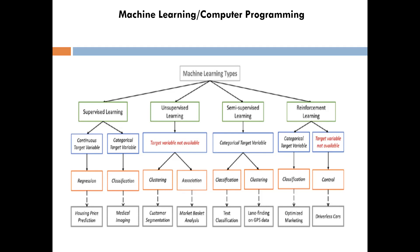A classic example is driverless cars, which are based on reinforcement learning. The camera senses a person on the road and the algorithm knows: if I don't stop, I can harm the person — that's not desired. The algorithm develops feedback for itself, just like how humans think. The difference from traditional programming is that what we've done so far is all if-else: if this, do that. But you cannot cover every situation in the world with if-else.